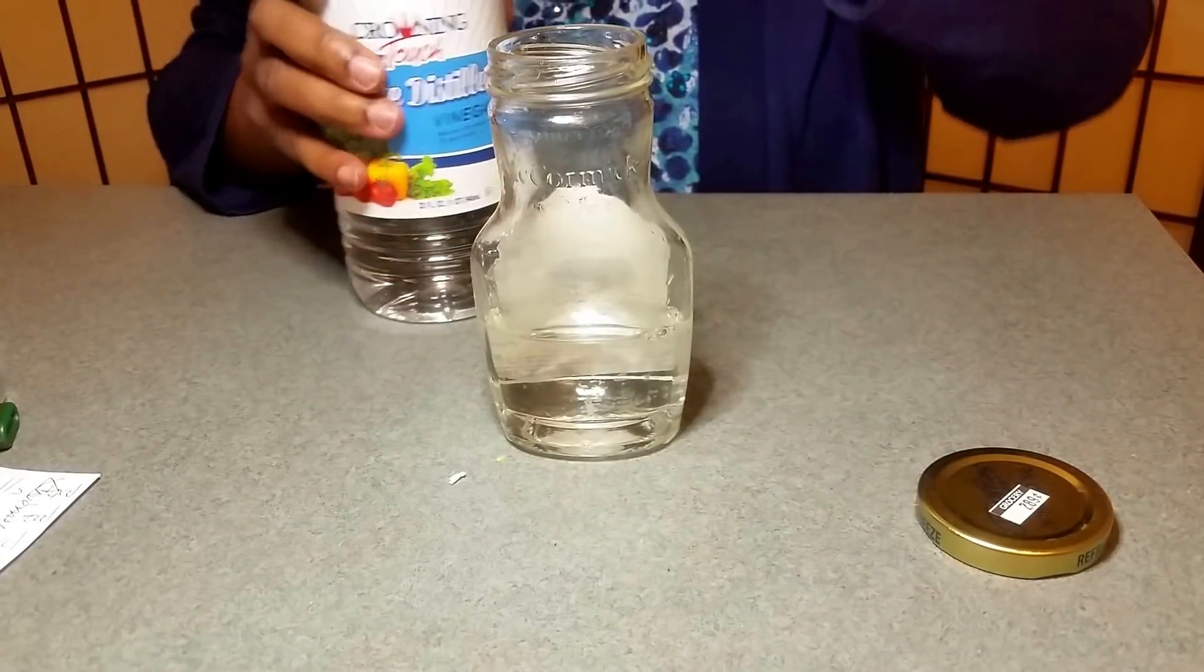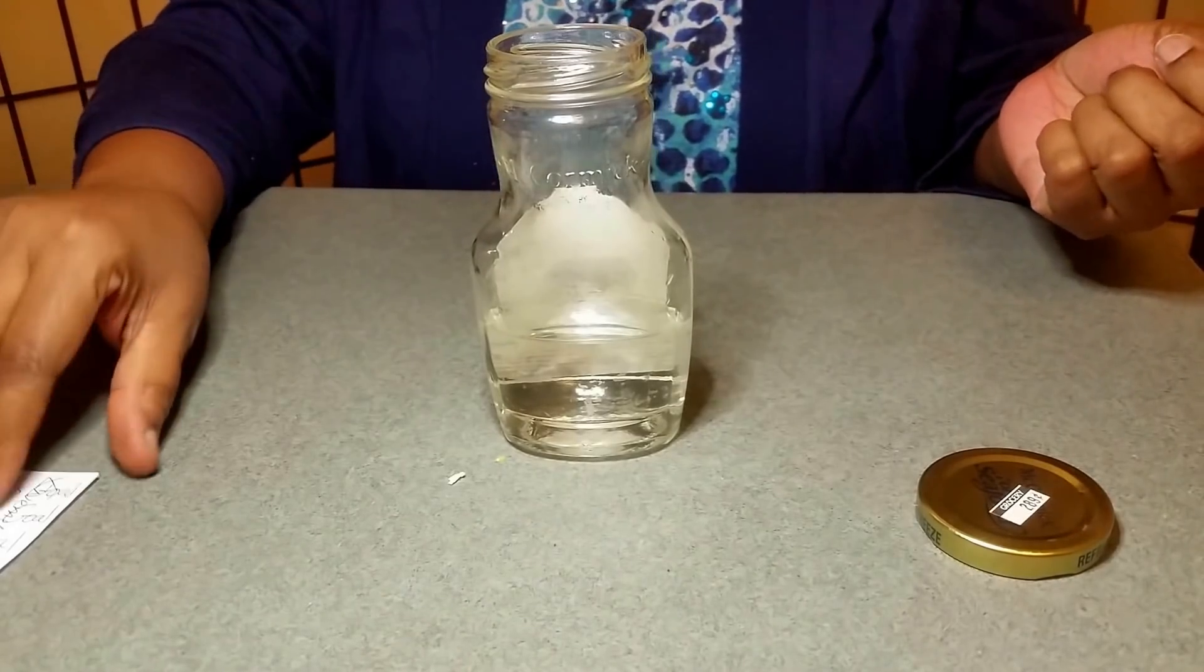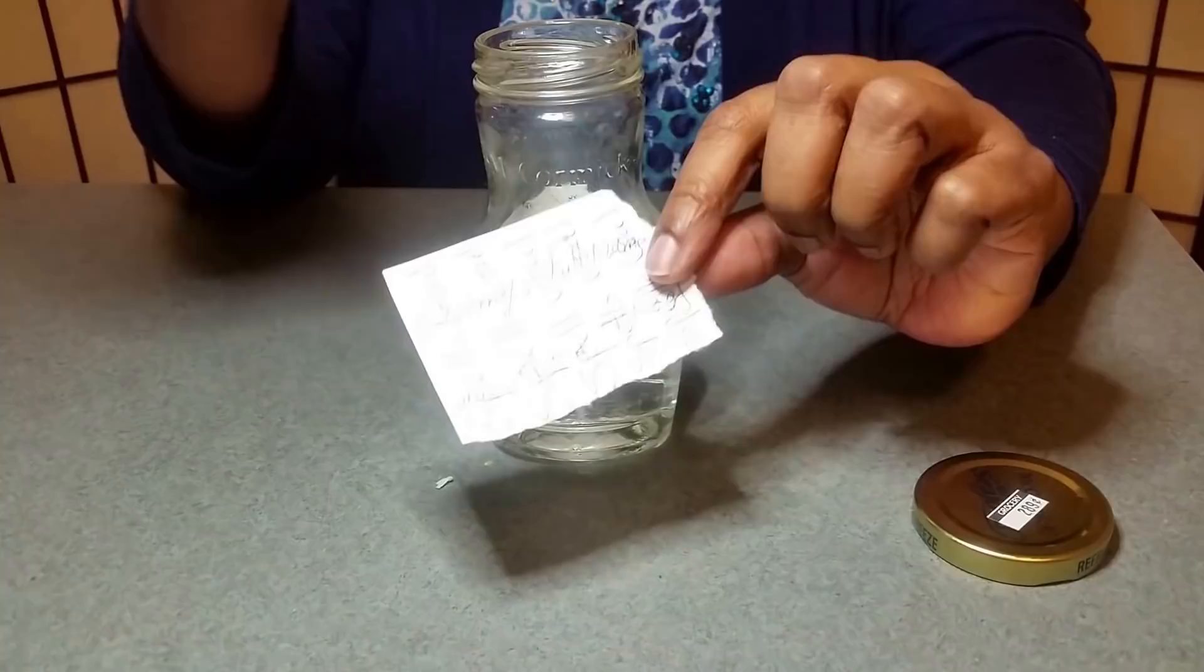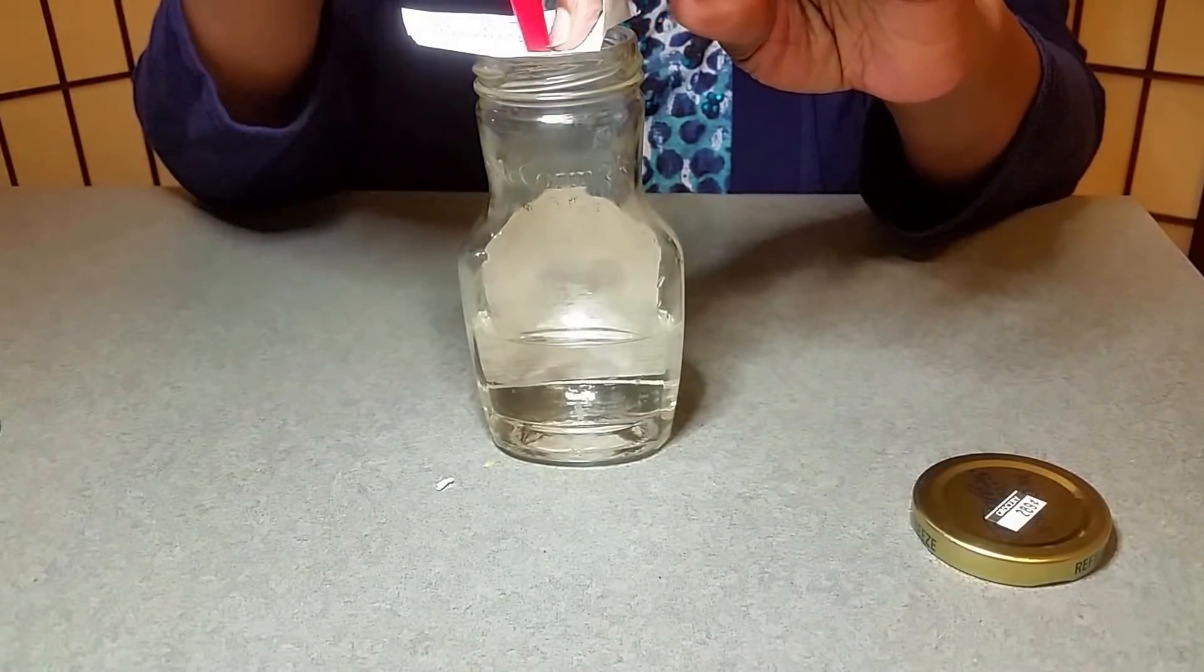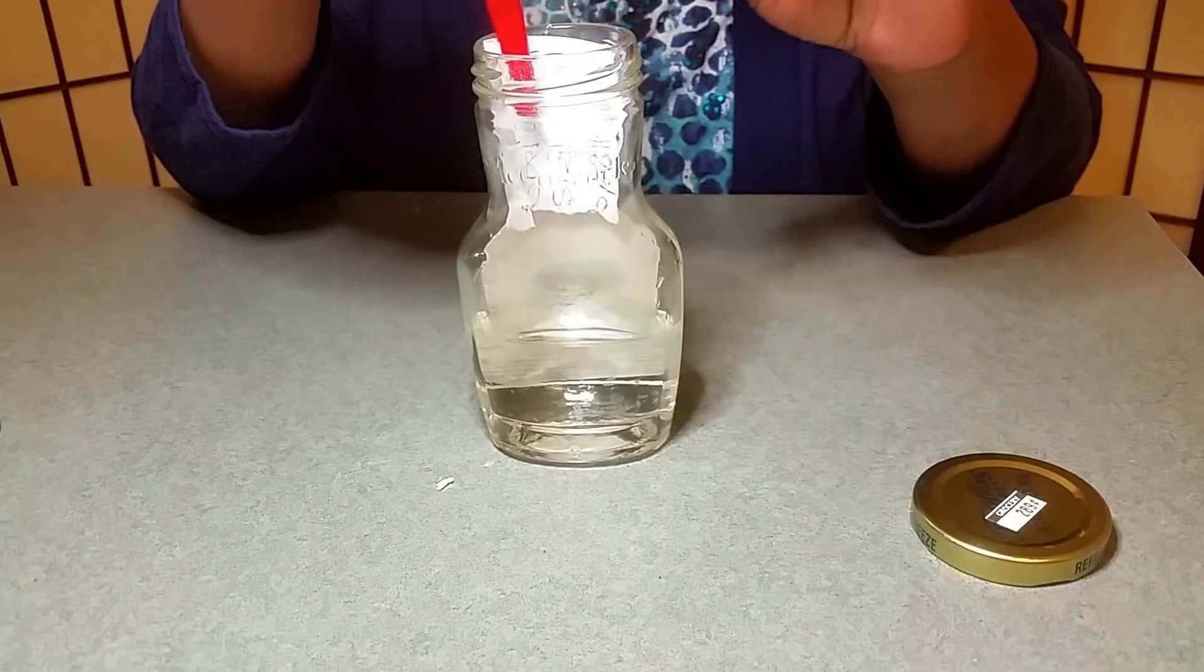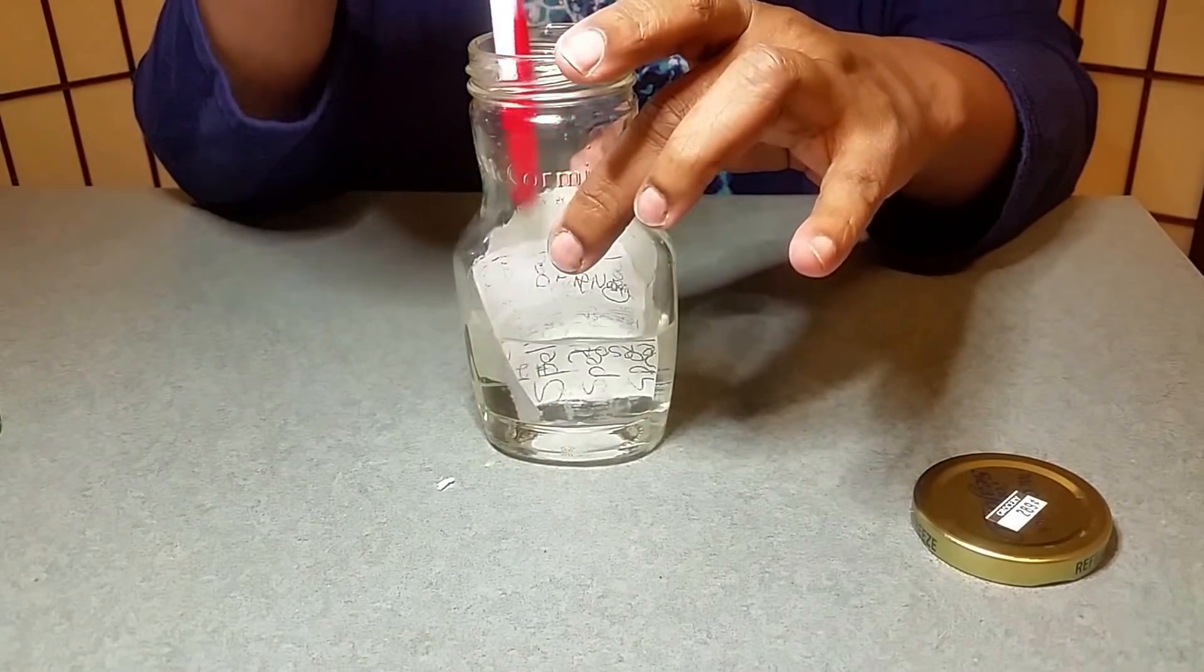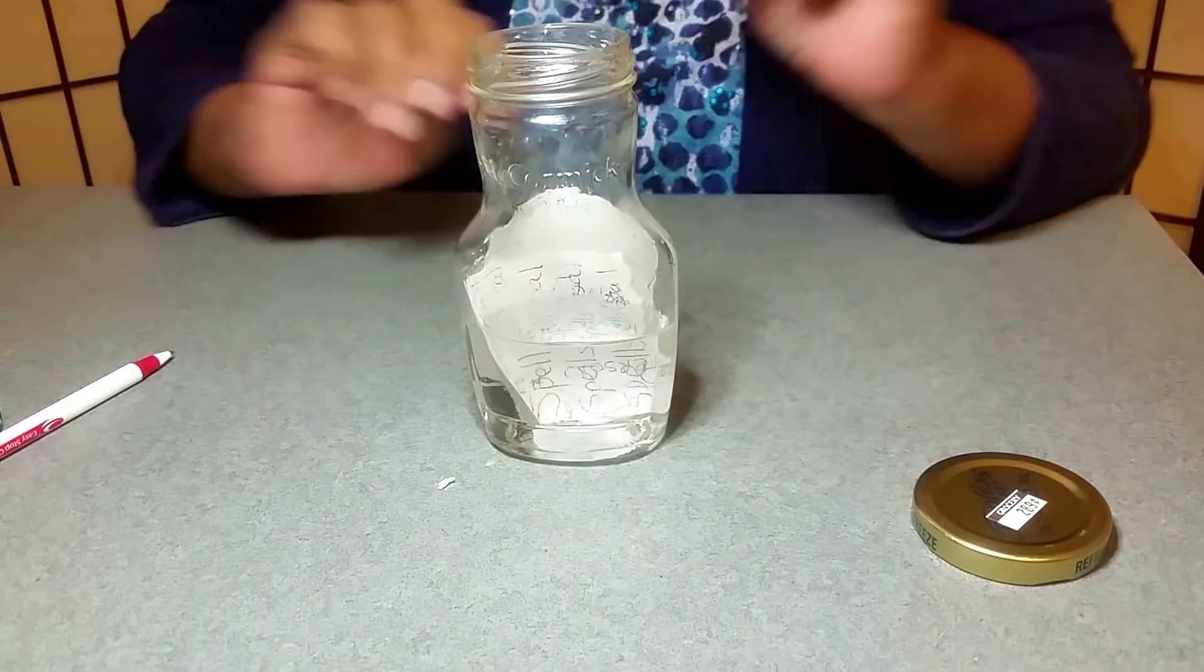And now the second thing you're going to put in the jar is the piece of paper with the names of the individuals that you are breaking up or getting rid of. And you're going to shove it inside of that jar. And I use the pen cap to help me since it's a tall one. So you want to get it all wet. Again, this is a harmful breakup spell. It's using vinegar.